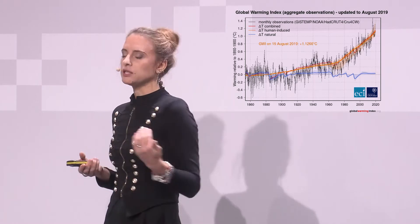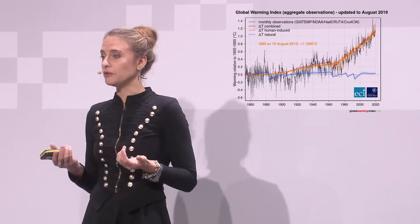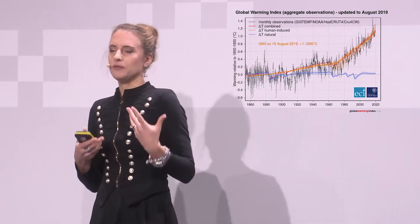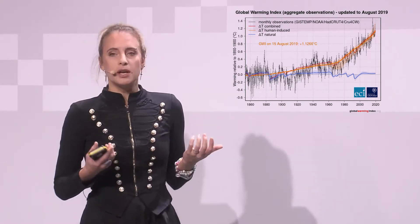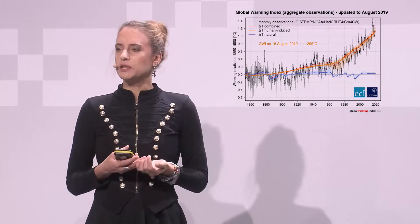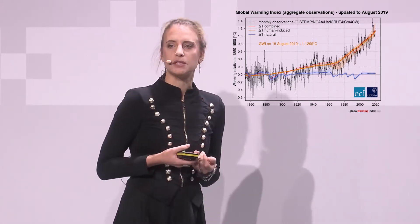So that includes changes in solar radiation — and climate deniers often use that, arguing it could be the sun. But if we take into account what the sun is doing and also volcanic eruptions — which explain some of these dips, like the last big dip from Mount Pinatubo in 1991 — we can simulate some of the ups and downs, but we cannot reproduce the increase in global mean temperature we observe since the 1960s if we only take natural forcings into account.